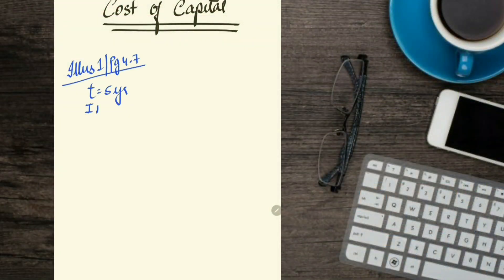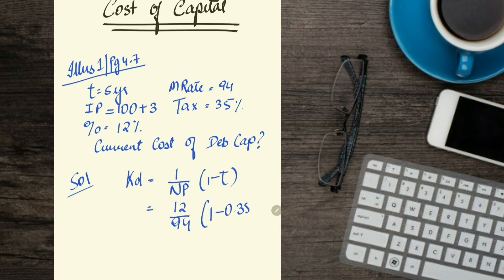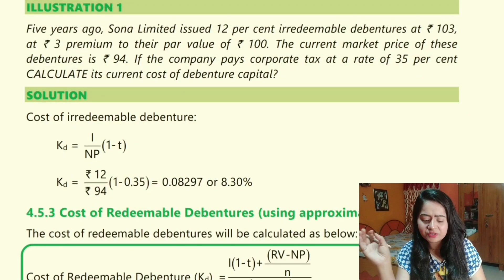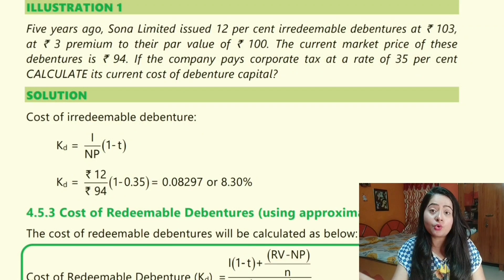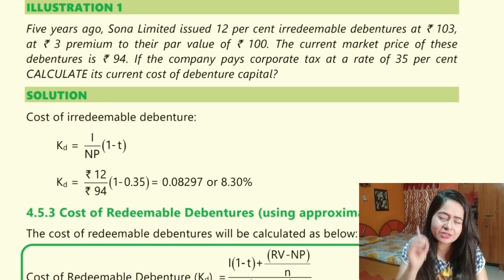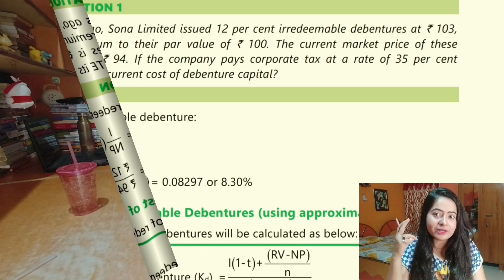For that small illustration, write down the key things — for example, the issue price, the premium, the market price, and what exactly you need to calculate, such as the current cost of debenture capital. Then just solve that small question using the formula. Later on, whenever you refer to that formula and that small question, you will quickly recollect what you had learned.